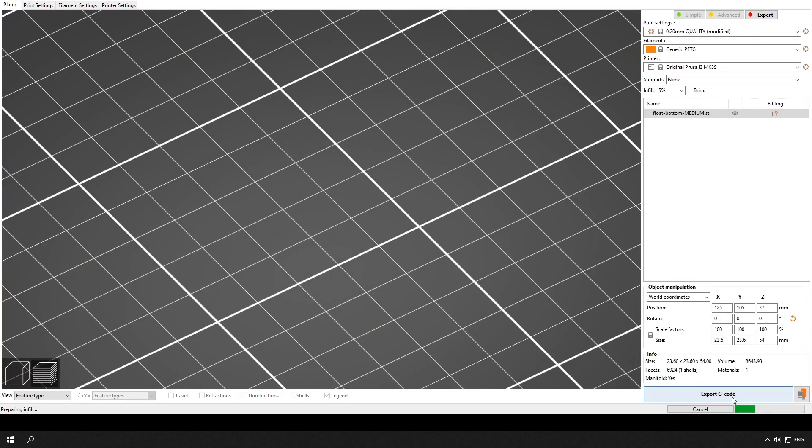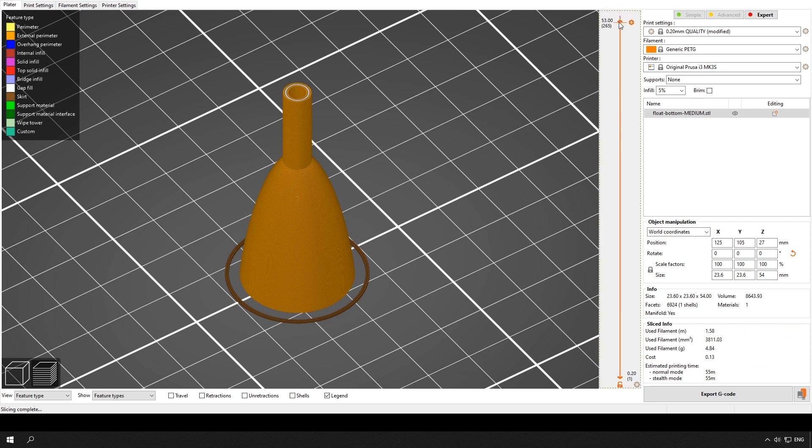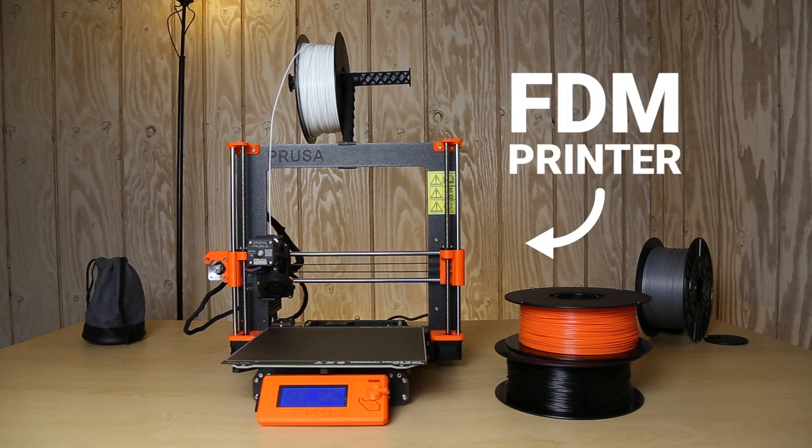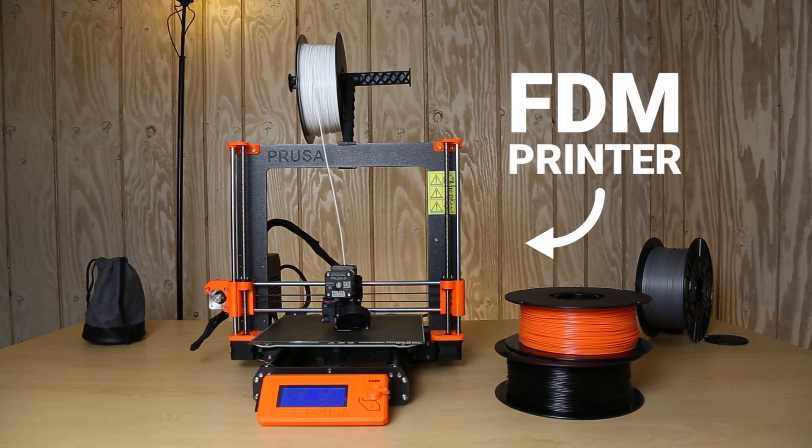Various things can be configured here, but I only need to tell the printer that this model needs to be printed hollow with some reinforcements inside and also set the thickness of the float's walls. After that, the file generated by the slicer can be sent to the printer and turned into a physical object.